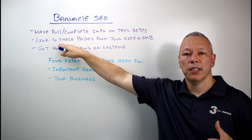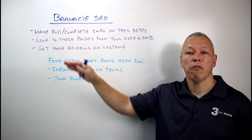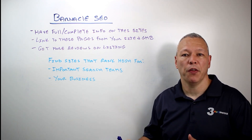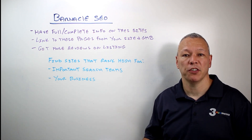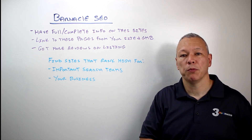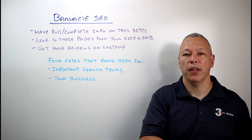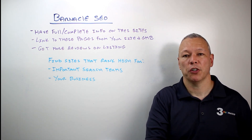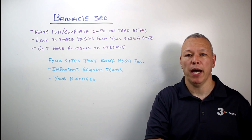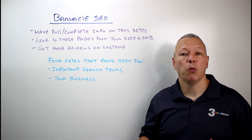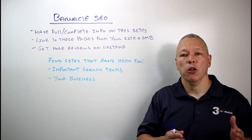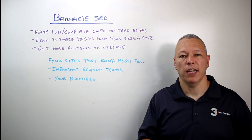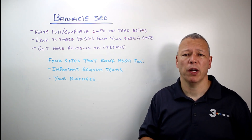Number two: you can link to these listing pages or third-party pages from your website and also from your Google My Business listing. If you have a third-party site where you have positive reviews, link to it from your website — you're giving your authority to that web page, which is going to help boost that listing higher in the search engine results because it now has links pointing back to it. Another situation where you'd want to promote a page is a local magazine or local blog that did a list naming the five best real estate agents or five best restaurants in your city.